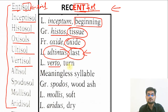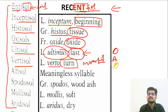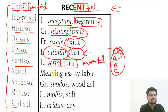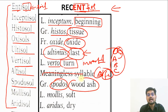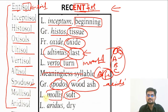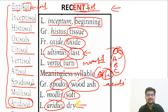Continuing with nomenclature: Vertisols are inverted soils where the O, A, B, C horizon has been inverted. Alfisol — A-L-F-I — stands for aluminium and iron containing soil. Spodosol comes from 'spodos' meaning wood ash, which is acidic in characteristic. Mollisol means soft soils. Aridisol comes from 'aridus' meaning dry region soil — that is desertic soil. By remembering the basic words and their meanings, you will always remember the entire USDA classification.